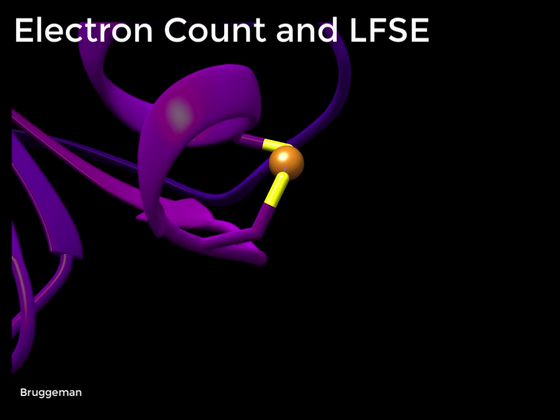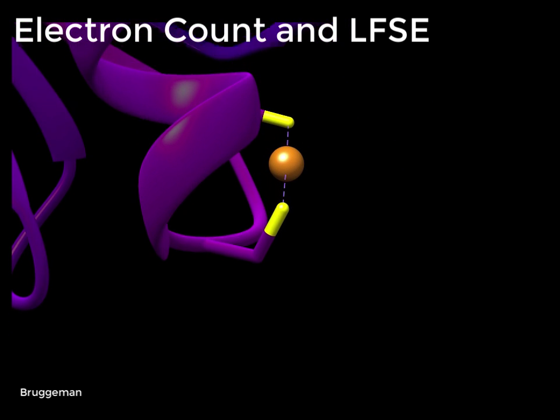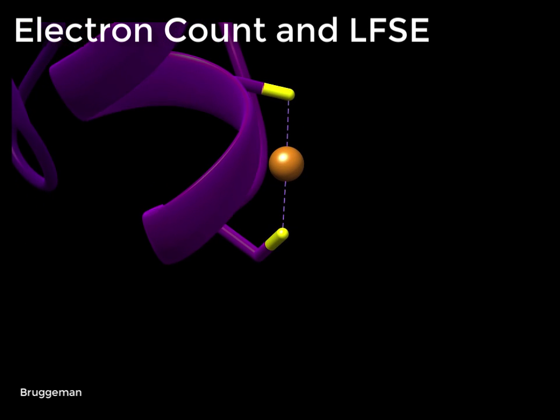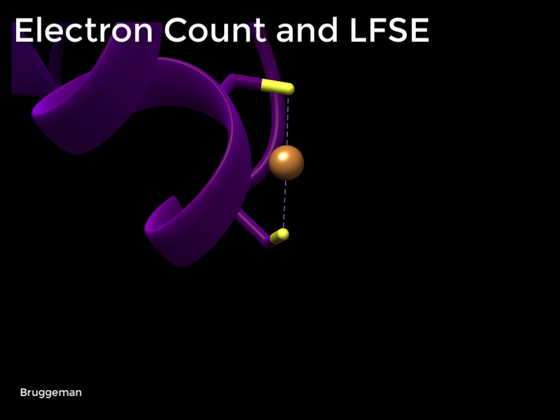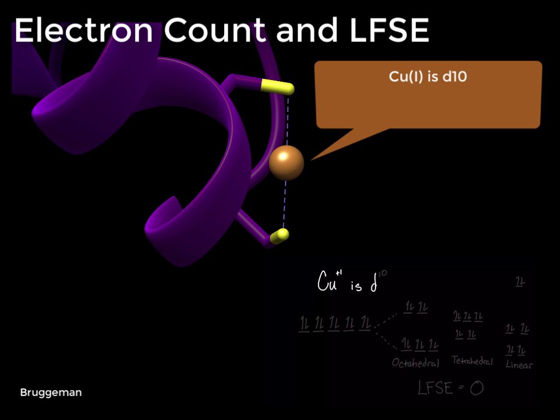Another critical difference between the copper 1 and copper 2 ions are the electron counts and the effects of ligand field stabilization energy. Ligand field stabilization energy is another principle of coordination chemistry that can be applied to explain how ATX1 stabilizes the copper 1 oxidation state. Copper 1 is a D10 metal, meaning that there is a complete set of 10 electrons in its D shell, and has an associated ligand field stabilization energy of zero.